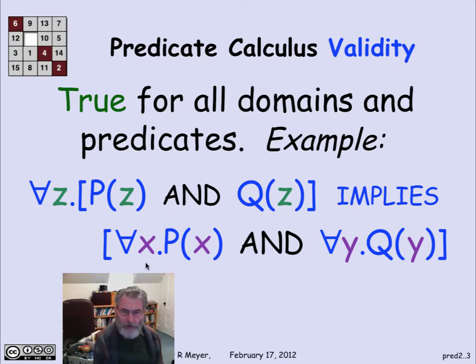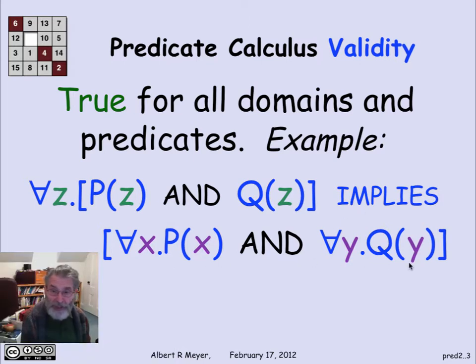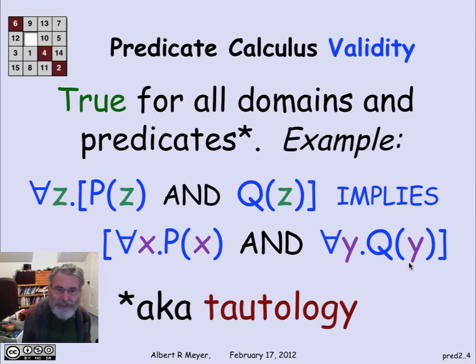The weird thing and the crucial thing about predicate calculus validity is that we're looking at formulas that are true no matter what the domain is and no matter what predicates P and Q are assigned to mean. This is a formula that's logically true no matter what you're talking about. Another synonym for this is it's known as a tautology. It's a logical truth that has nothing to do with any particular thing that you're concerned about.